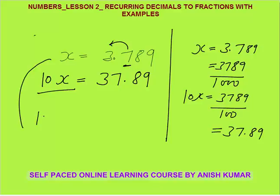If I multiply the number by 100, two digits will shift to the left of the decimal. The number was 3.789 — this becomes 378.9. You can see that two digits, 7 and 8, are shifted to the left of the decimal.